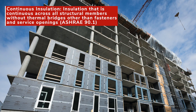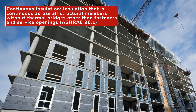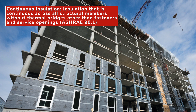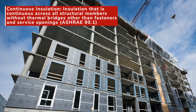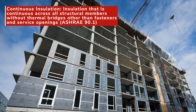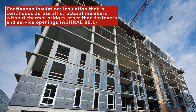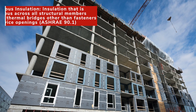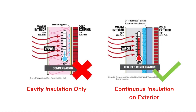One way to improve this wall instead would be to add continuous insulation over the framing. Since 2012, the International Energy Conservation Code has required the use of continuous insulation, or CI, in the building envelope. By putting the insulation on the outside of the studs instead of solely in between them, this reduces or eliminates thermal bridging, improves the wall's overall thermal performance, and reduces the likelihood for unwanted moisture issues.